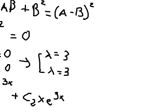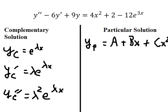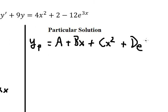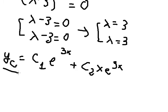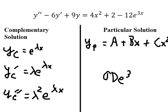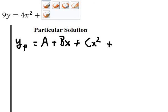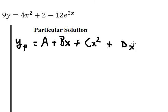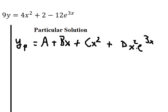We also have e^(3x) in the forcing function. However, e^(3x) already appears in yc, so if we tried D·e^(3x), substituting it into the equation would give zero. That is why we must use D·x²·e^(3x) instead, increasing the power of x by 1 — from power 1 to power 2.